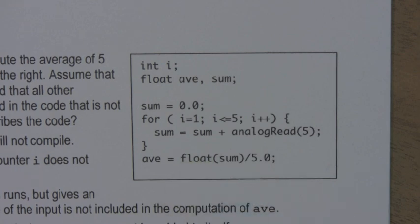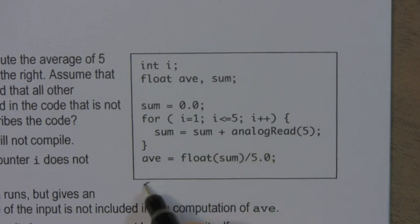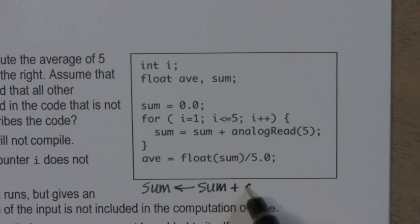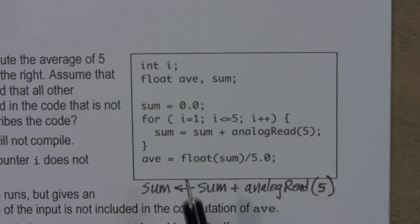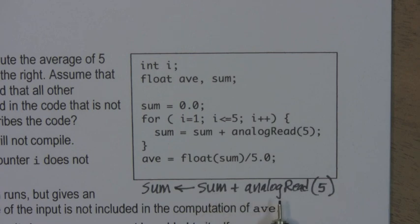This float sum, the float is unnecessary because sum is already a float. And this statement here, sum equals sum plus analog read, that's best interpreted in general as an assignment. Sum is assigned the value sum plus analog read. So the way to interpret this statement here with the equal sign, the equal sign is an assignment operator. We have the current value of sum. We add to it the current or the just made value of reading on analog pin 5. And the result gets put into sum. So sum is replaced by the previous value of sum plus the current read. So this is just an accumulation in sum.